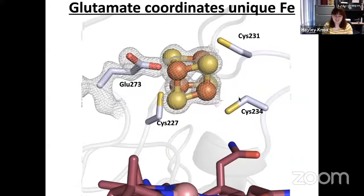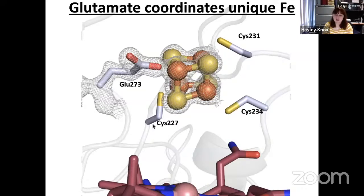When we looked more closely at how those cofactors were bound, we noticed some unique features. Looking at the cluster, we found it is not only ligated in the canonical CX3CX2C motif, but there is a fourth unexpected ligand. Glutamate-273, a completely conserved residue, binds to the free or unique iron where SAM should bind. The binding of this glutamate results in a fully ligated radical SAM cluster, which could explain why TSRM does not reductively cleave SAM if SAM cannot bind to the cluster. This is the first example we've seen of a fully ligated radical SAM cluster.